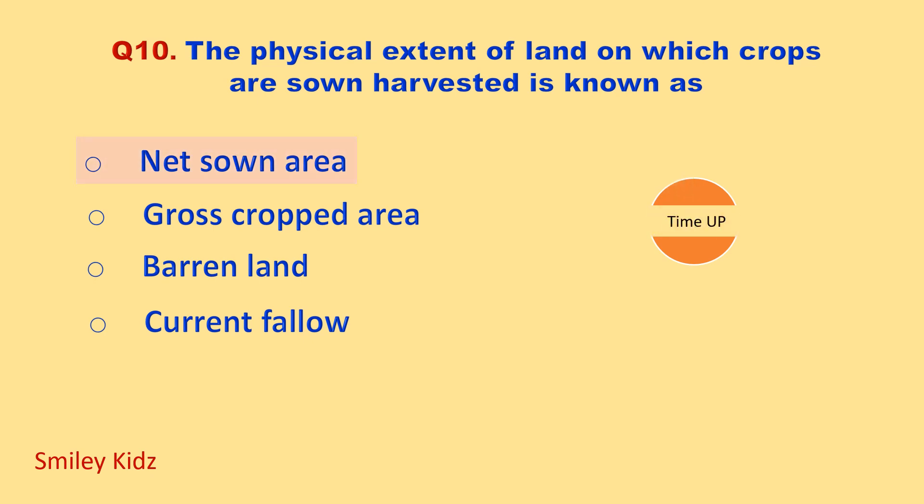Time up. The correct answer is net sown area. The physical extent of land on which crops are sown and harvested is known as net sown area.